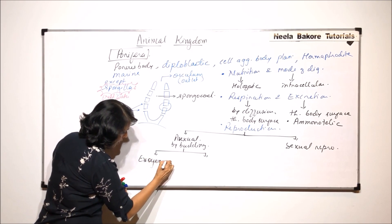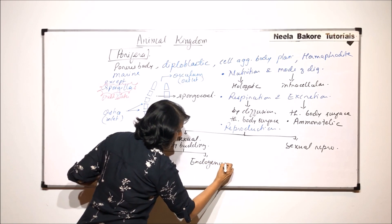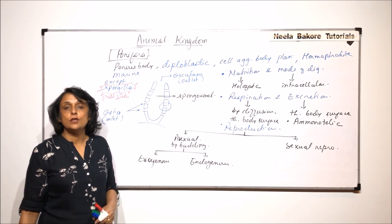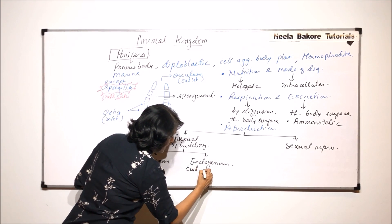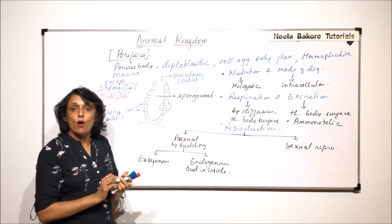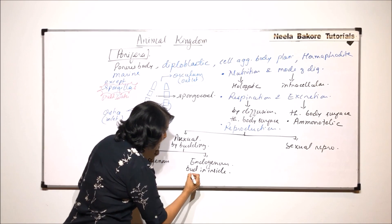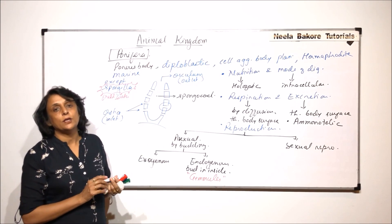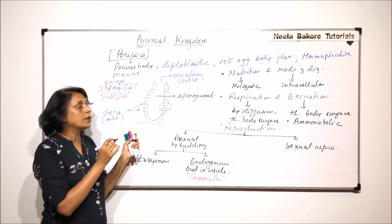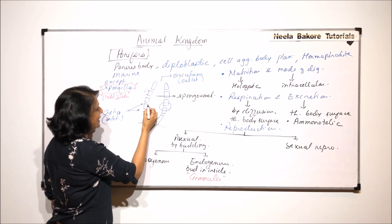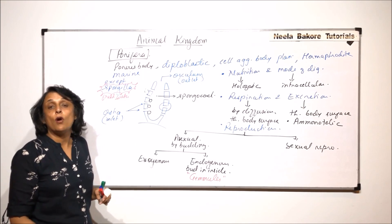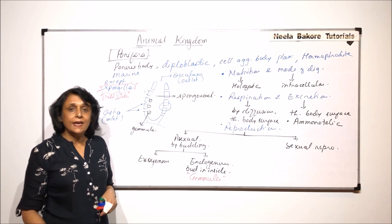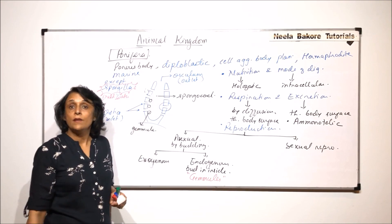Exogenous means a bud is formed outside the body, which is the very common one. Endogenous means the bud is formed inside. The endogenous buds formed inside are known as gemules. Gemules help in perennation or propagation — the buds would be released. In case of endogenous buds, these gemules are formed on the inner side, and once the bud is fully formed it will be released from the osculum.